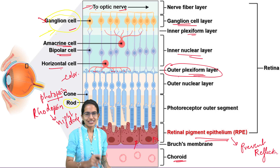So in this section we have understood the structure of the eye. We have talked about how the functioning of the eye takes place — the mechanism of vision along with the structure of the eye and the internal layers of the retina, which is an extremely important topic. Wish you very good luck and we will be covering many similar topics in the upcoming sessions. Stay subscribed.